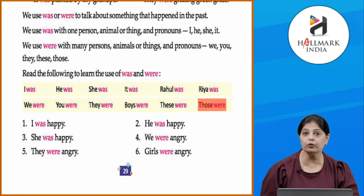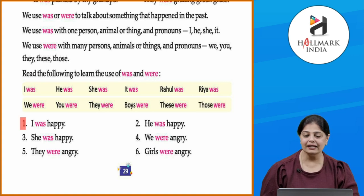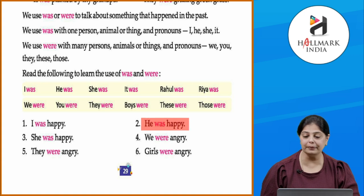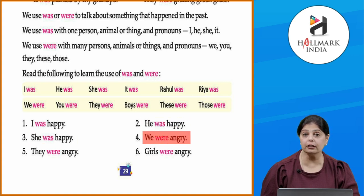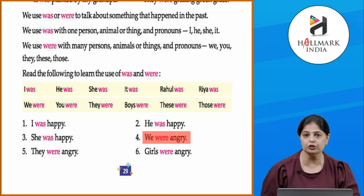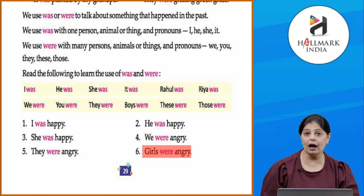Dekho — jab hum single person ke baare mein baat karte hain, hum 'was' use karte hain. And when we are talking about more than one, then 'were'. For example: I was happy, he was happy, she was happy. We were angry — 'we' matlab a group, more than one person. They were angry, girls were angry.